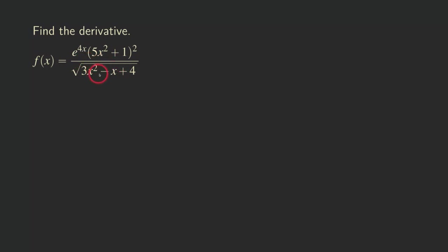If you look at this function and we are doing it the usual way, then we are going to have to deal with the product rule, we have to deal with the quotient rule, we have to deal with the general power rule, and there are a lot of different things that we need to worry about. And then of course there is also the chain rule.